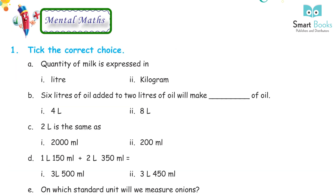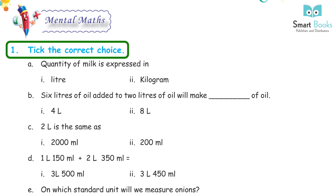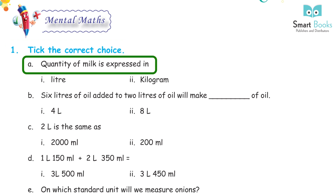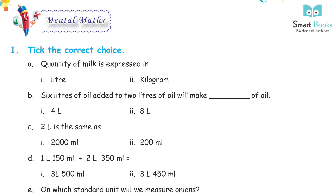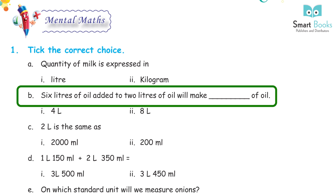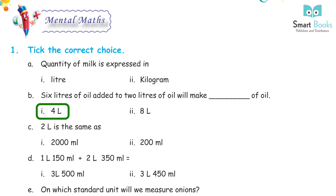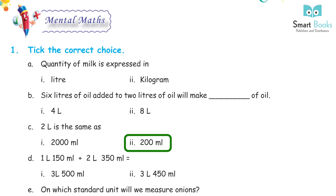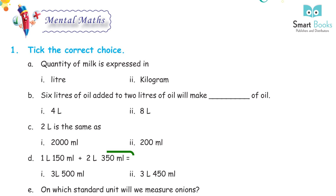A cow gave 10 L 250 ml of milk; the milkman sold 7 L 750 ml. How much milk was left? Answer: 2 L 500 ml. Mental maths: Choose the correct answer. A quantity of milk is expressed in liters or kilograms? Answer: liters. Six liters of oil added to two liters of oil makes how much? Answer: 8 liters.